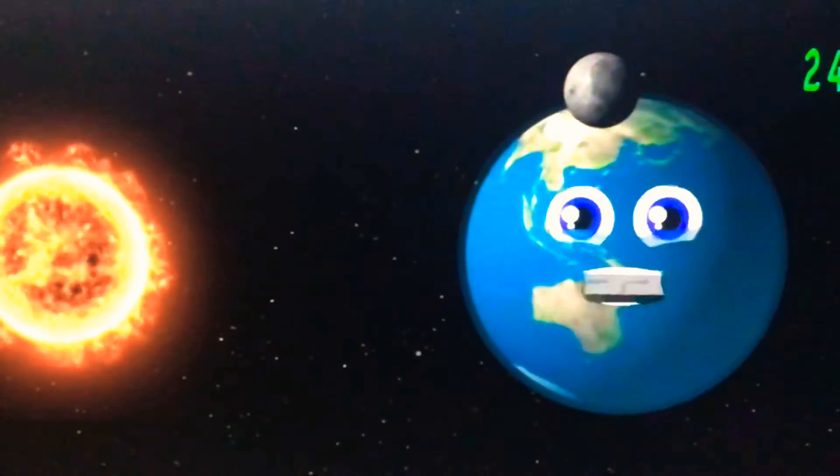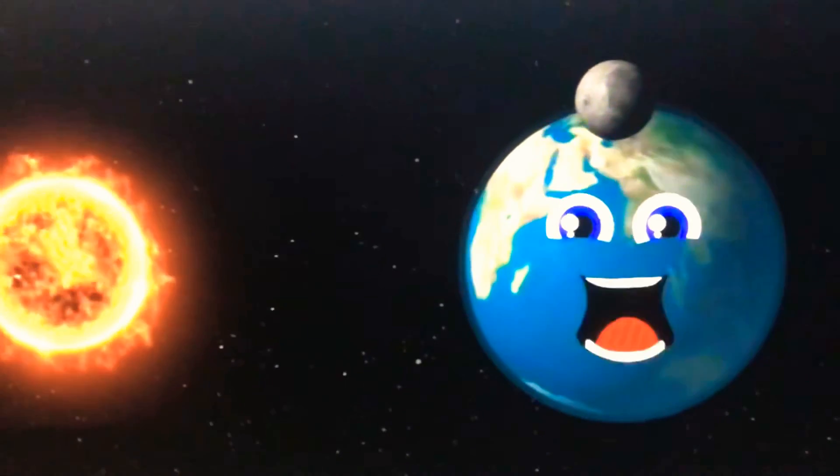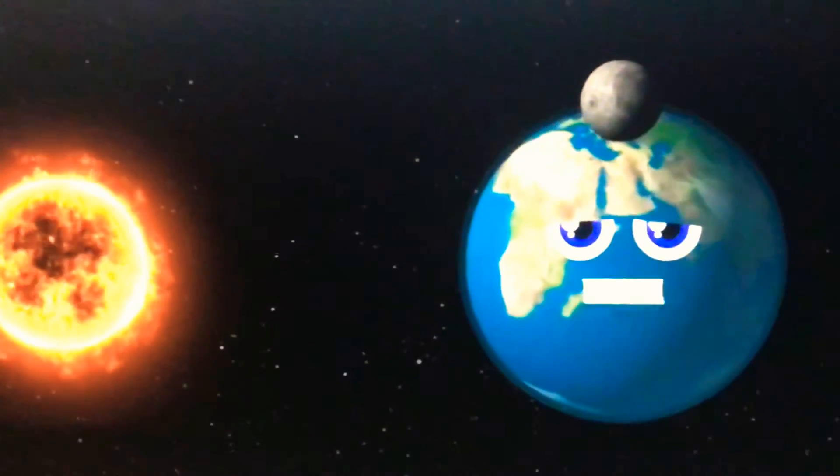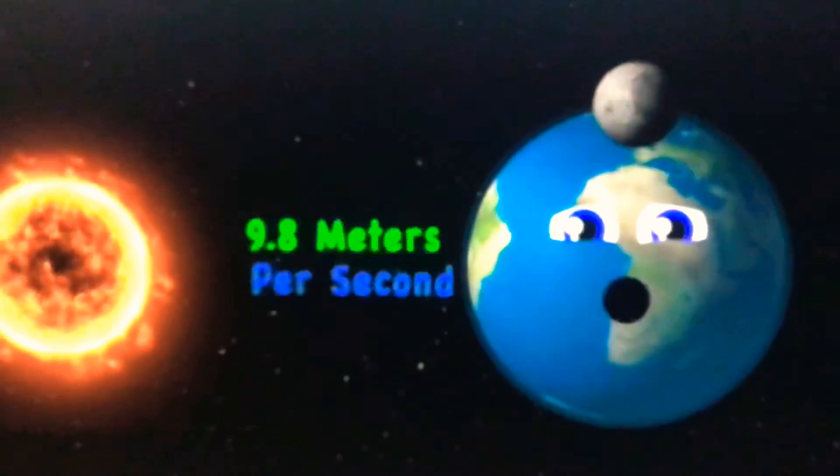I take 365 Earth days to orbit the sun. 24 hours makes one day, that's just one time that I'm spun. You won't fly off into space, gravity's pulling you down, as fast as 9.8 meters a second towards the ground.